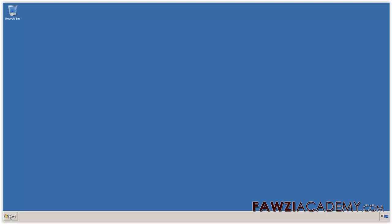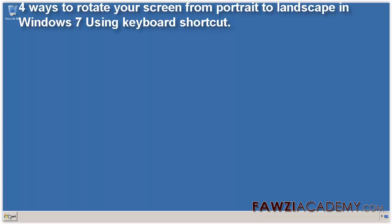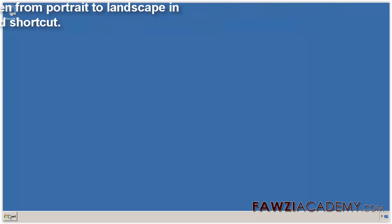Hi, I'm Sammy from Fozzie Academy. In this video, I will talk about how to create shortcut keys to rotate screen in Windows 7. Four ways to rotate your monitor screen and change it from portrait to landscape in Windows 7 using keyboard shortcut.